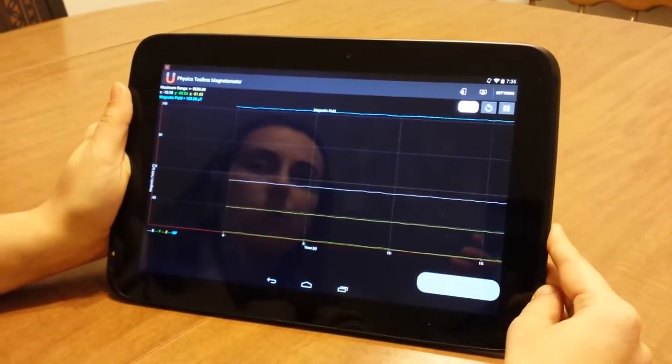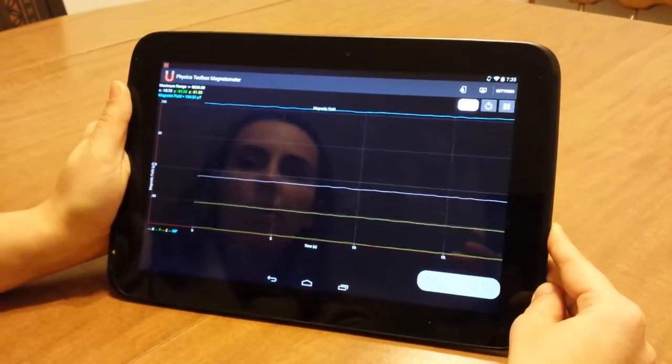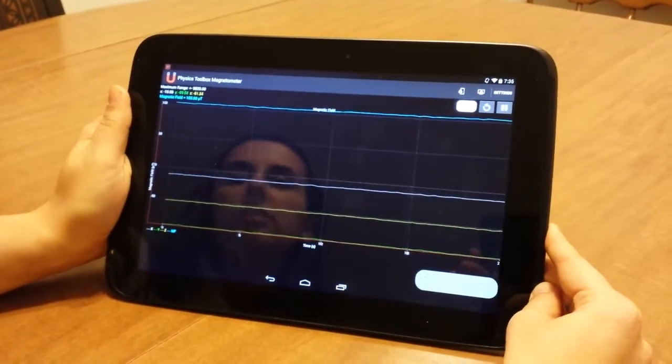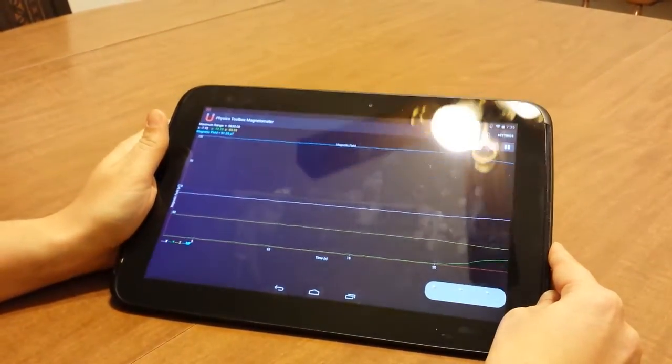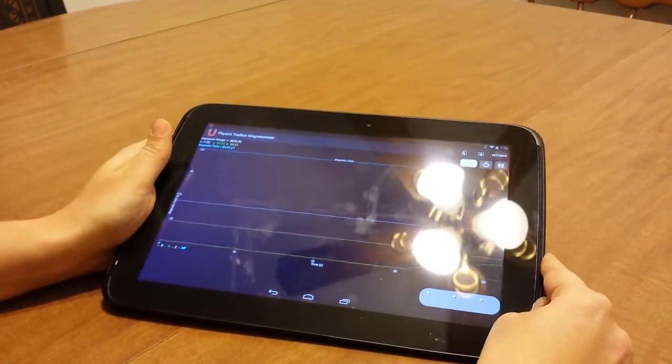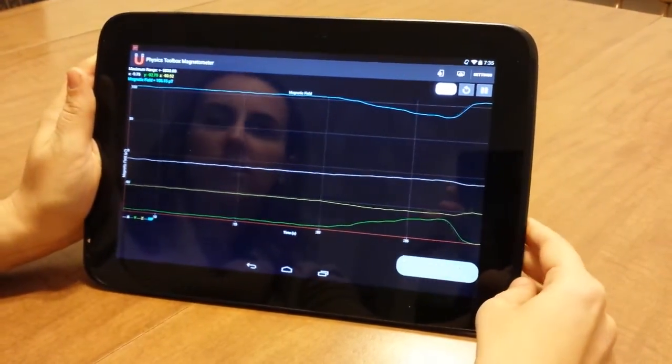So there's a few things I can do. One of the things I can do is to find out about just the background magnetic field of the Earth, and I can take a look at how changing the angle of the tablet changes the values for each of my dimensions rather significantly.